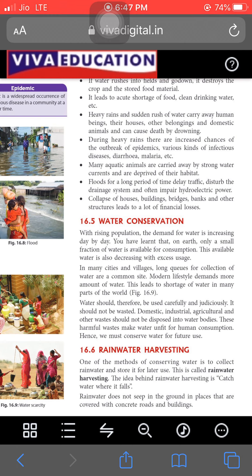Rainwater does not seep into the ground immediately, so we can collect it. Some homes have sloped roofs with pipes on the sides — when water falls on the roof, it flows through the pipes and is collected. This collected rainwater can then be used for farming and domestic use after cleaning.